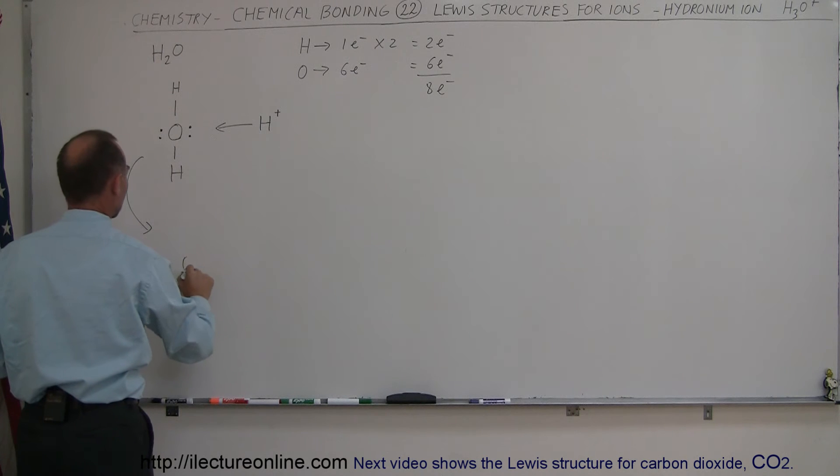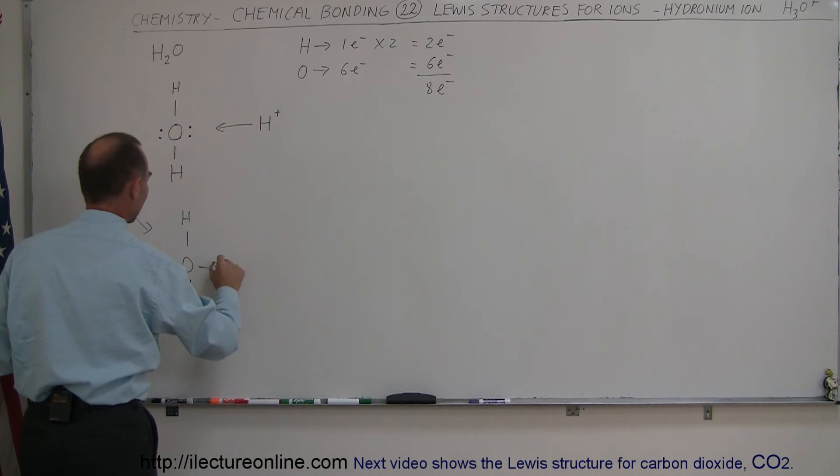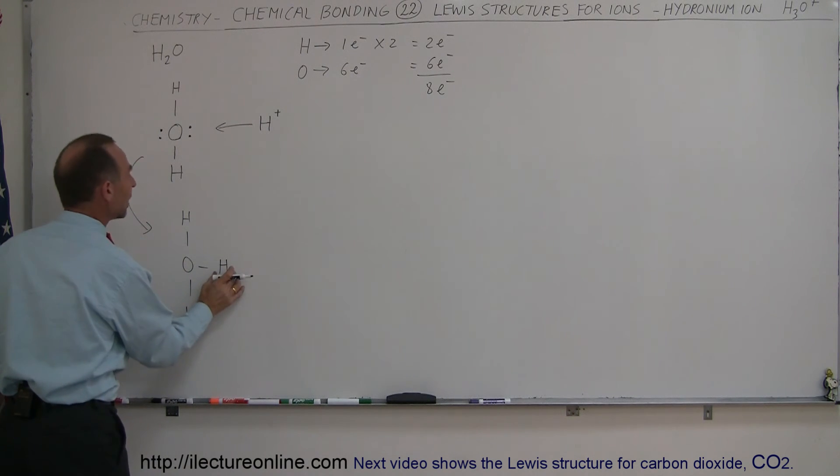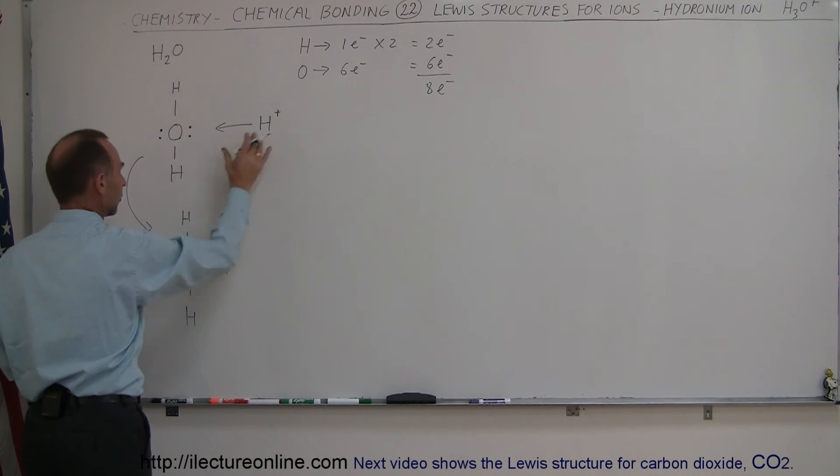We have an oxygen in the middle, we have a hydrogen over here, we have a hydrogen over here, and now we have a third hydrogen over there, but it came with no additional electrons. And then we still have the two electrons on this side right there.